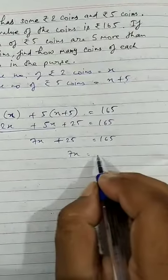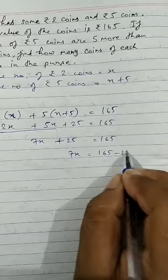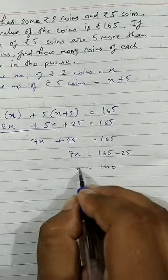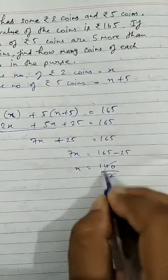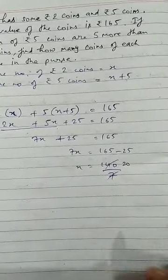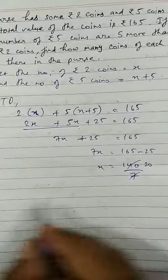7X is equal to 165 minus 25, it gives us 140 and 7 into 20 is 140.